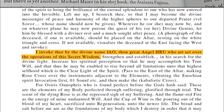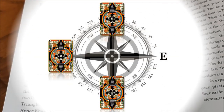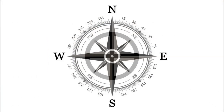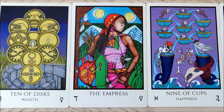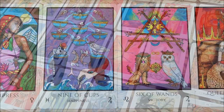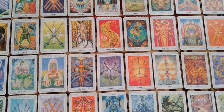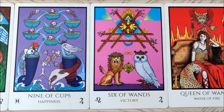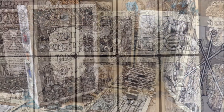The Riddle of the Sphinx spread accounts for the four directions as the four elements, the four letters of the divine name Yod-Heh-Vav-Heh, and the four powers of the Sphinx. I'm going to be working with the Tabula Mundi Tarot. The Thoth Tarot is going to be a great one to work with for this session — it's the system that the Tabula Mundi is based on — and the Spirit Keepers Tarot will give you good mileage.